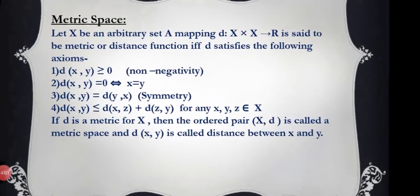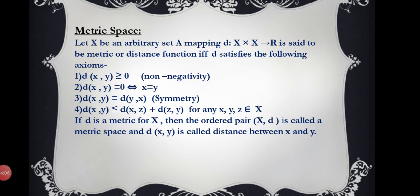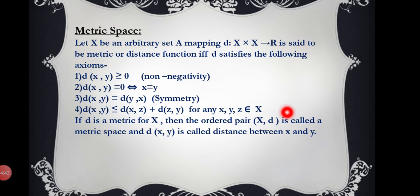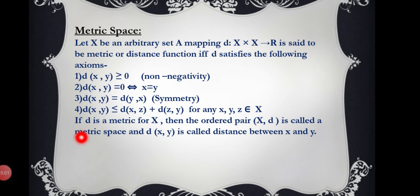The second definition is of metric space. Let X be any arbitrary set. A mapping d: X × X → ℝ is said to be a metric or distance function if and only if it satisfies the following four axioms: (1) d(x, y) ≥ 0, non-negativity; (2) d(x, y) = 0 if and only if x = y; (3) d(x, y) = d(y, x), the symmetric property; (4) d(x, y) ≤ d(x, z) + d(z, y) for any x, y, z ∈ X. If d is a metric for X, then the ordered pair (X, d) is called a metric space and d(x, y) is called the distance between x and y.